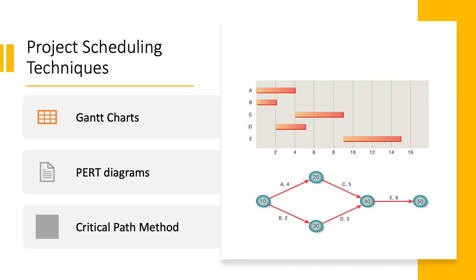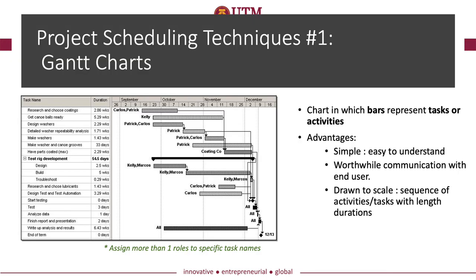There are three basic but effective techniques to visualize the project schedules, namely the Gantt Chart, PERT diagram, and critical path method, or in short CPM. Each of the techniques has its own advantages and disadvantages, and the technique should be applied based on our purpose of presenting detailed information for a project planning and schedule.